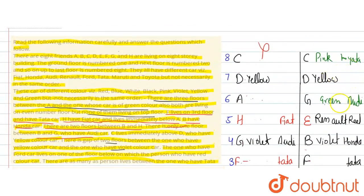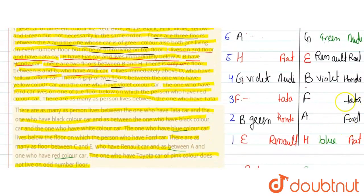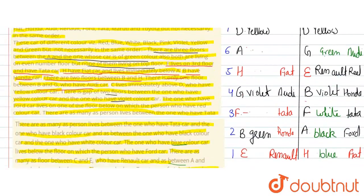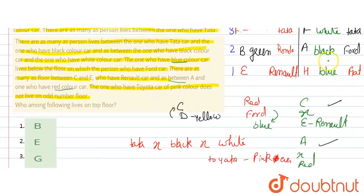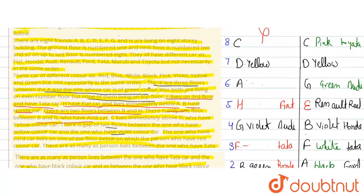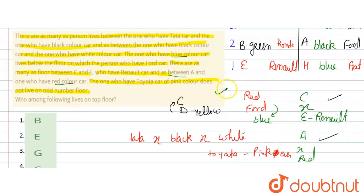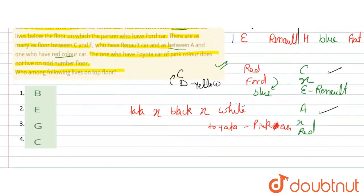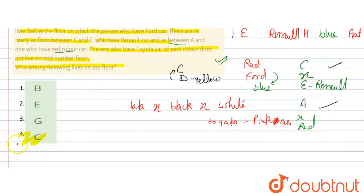So with the Tata, black, and white arrangement confirmed, the final arrangement is complete. The person living on the top floor has the pink color car, which belongs to C. So C is the answer — option number 4. Option 4, C, is the correct answer. Thank you.